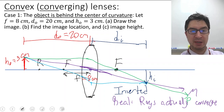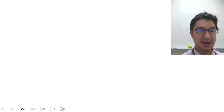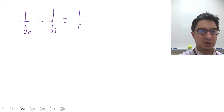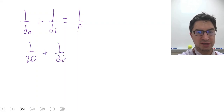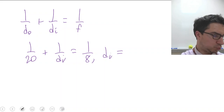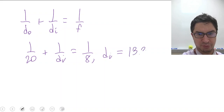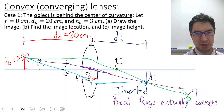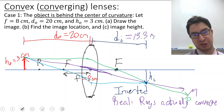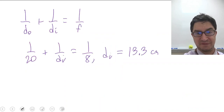Now for part B — finding the image location using the lens equation: 1 over D sub O plus 1 over D sub I equals 1 over F. Substituting: 1 over 20 plus 1 over D sub I equals 1 over 8. Solving gives D sub I equals 13.3 centimeters. This is shorter than D sub O, which is consistent with the diagram we drew.